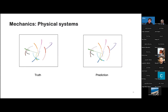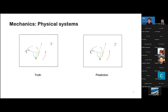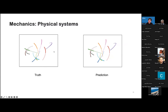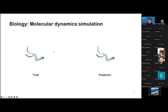We also have visualizations from the physical system. We can see that our prediction is very close to the ground truth in the out-of-distribution setting. We also have a case of molecular dynamics, and our model can generate accurate molecular dynamics simulation close to the ground truth.